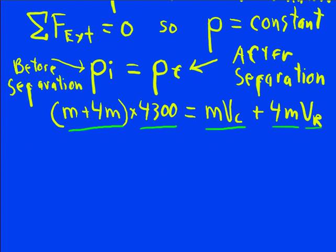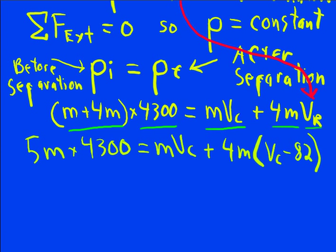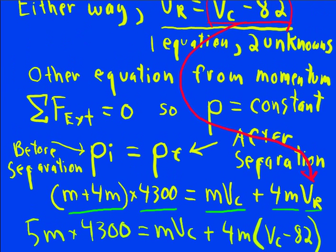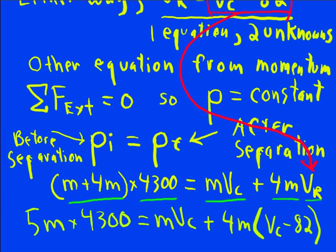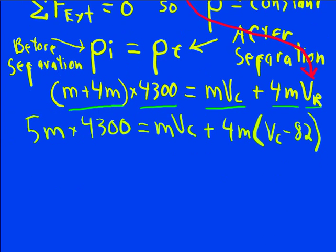What we need to do is solve for one of those unknowns. I already solved the velocity of the rocket to be Vc minus 82. So I substitute that in for Vr, and now I get an equation with only V capsule in it. And so I just need to carry out this multiplication and solve for V capsule.